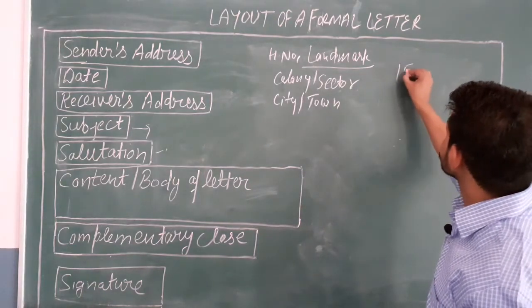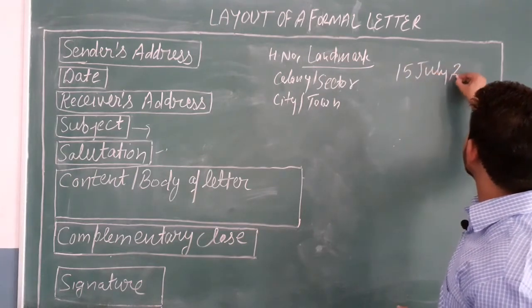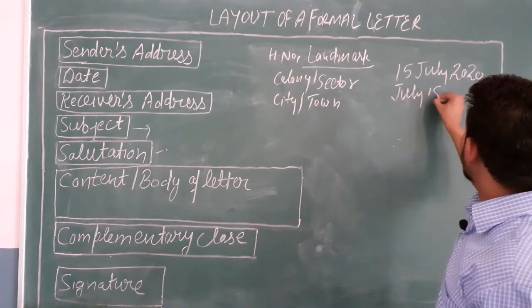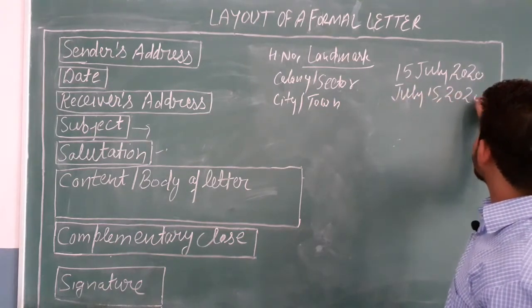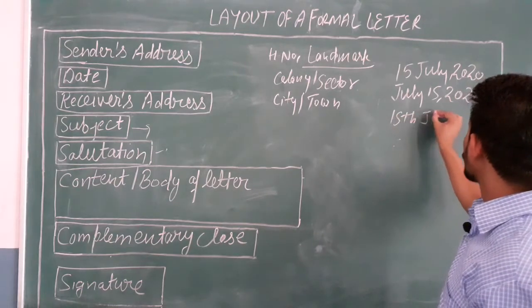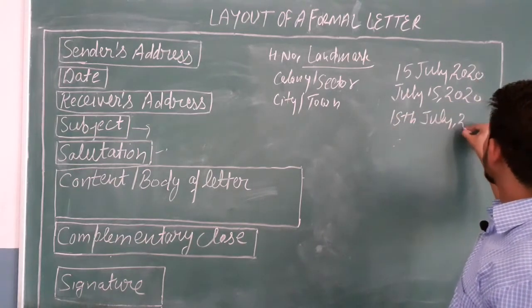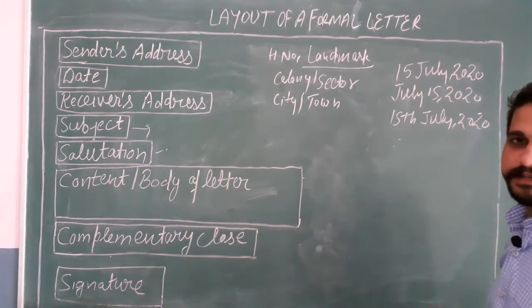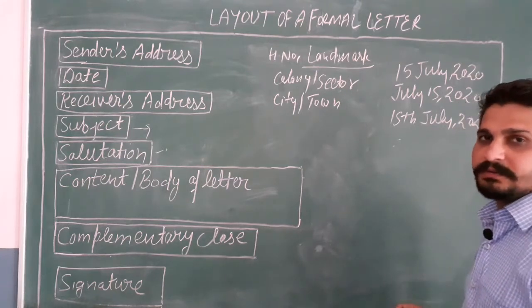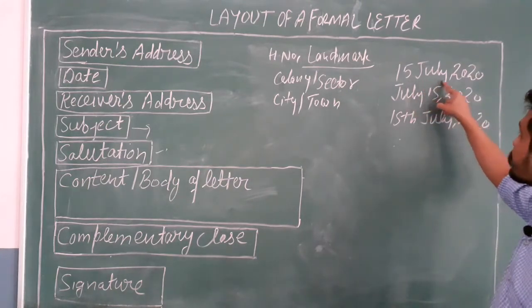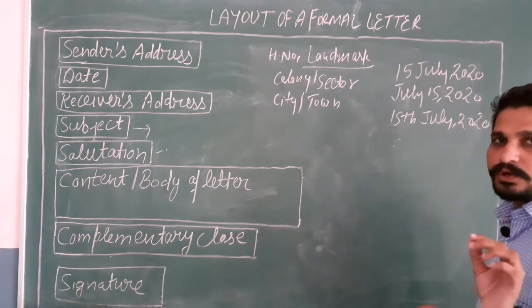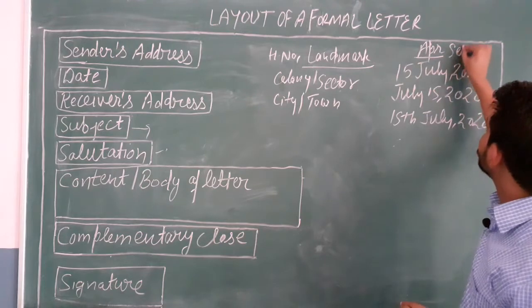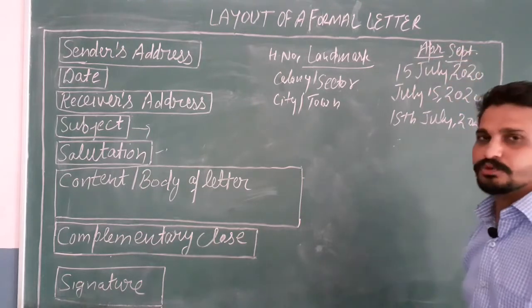We have many formats for writing the date, like 15th July 2020. The important thing to keep in mind while writing the date is that the spelling of the month should be written in expanded form, not in abbreviated form. You are not supposed to write APR for April or SEPT for September — it should be written in the expanded form.